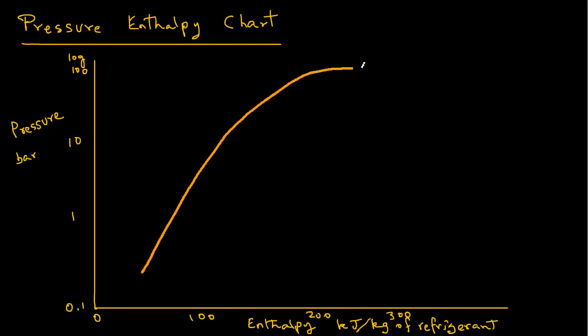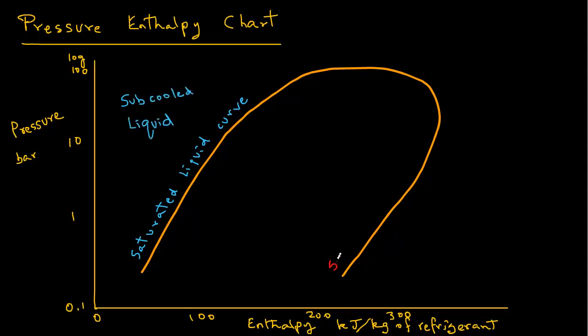Next we draw a bell-shaped curve skewed to the right. Now the left side curve we will label as saturated liquid curve. Any point on that curve represents saturated liquid state. On the left-hand side the region is sub-cooled liquid. And the right-hand curve we will label as saturated vapor curve. So any point on this right-hand side curve represents that the refrigerant is in a saturated vapor state. Now the region on the right-hand side is superheated vapors.